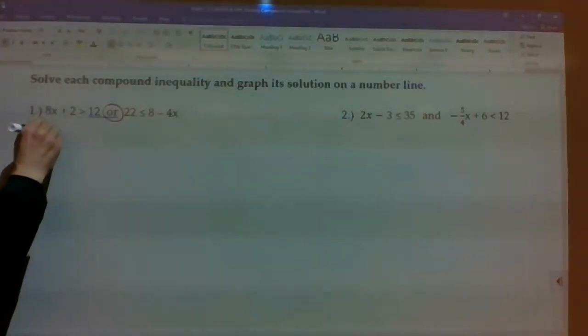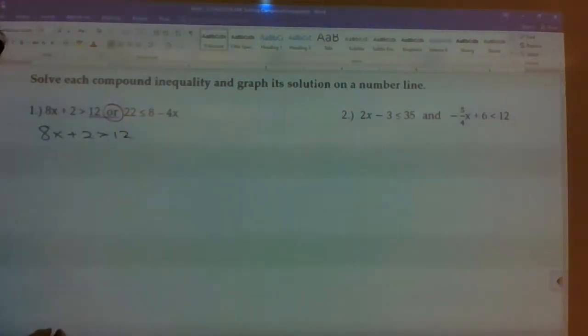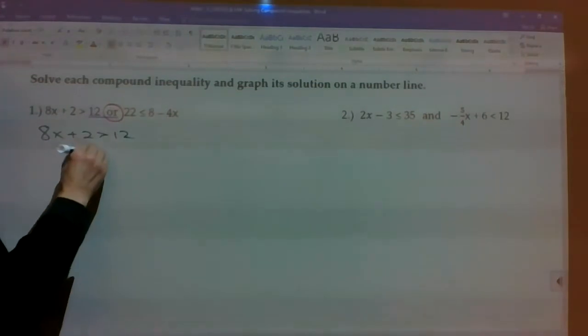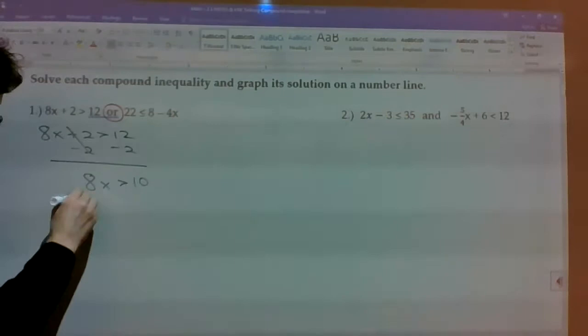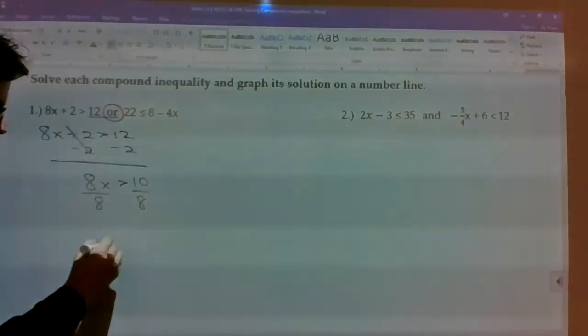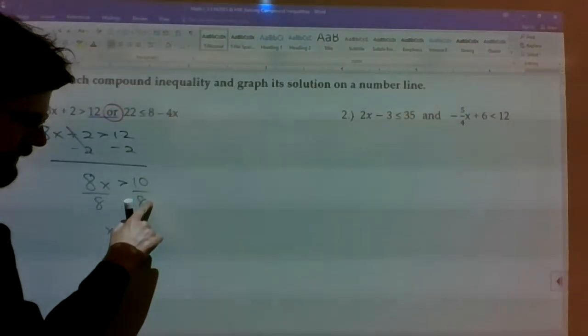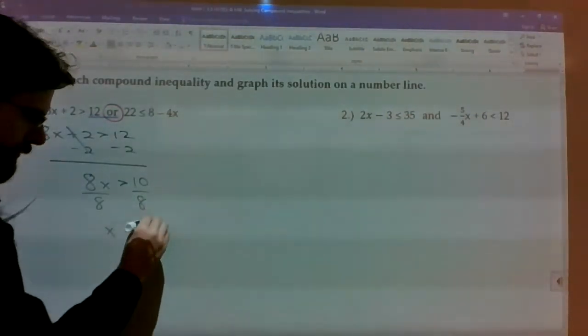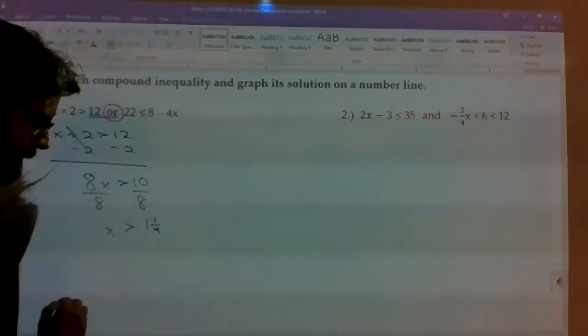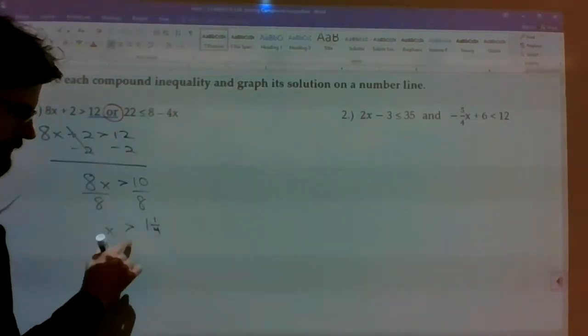So we're going to take 8x plus 2 is greater than 12 and solve that one first. If I subtract 2 from both sides, 8x is greater than 10. Divide both sides by 8. X is greater than 5 over 4, which gives us 1 and 1 fourth. Alright, there's part of my solution. Part 1.